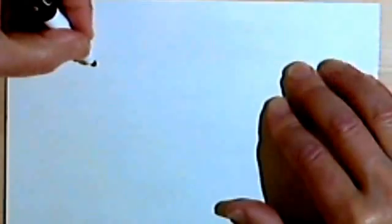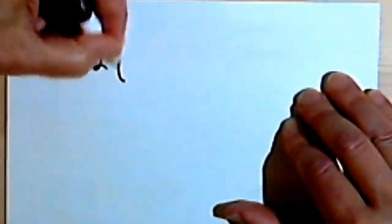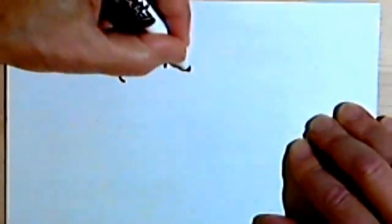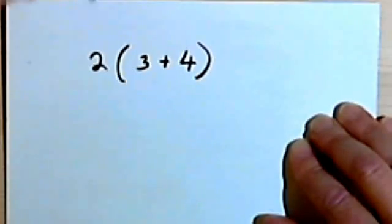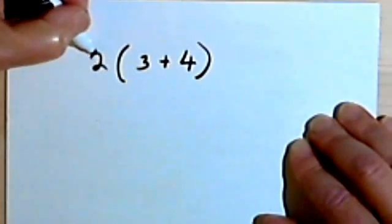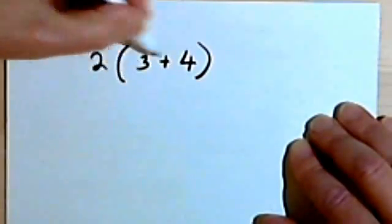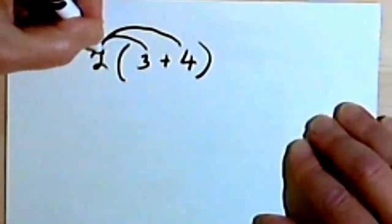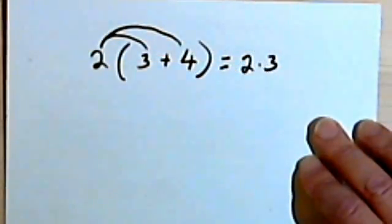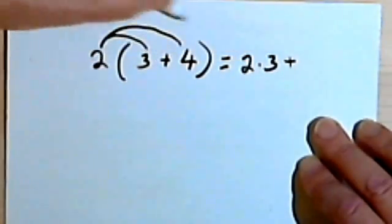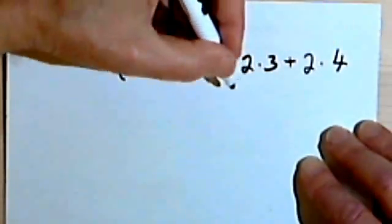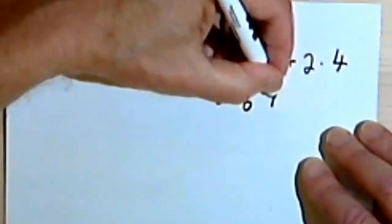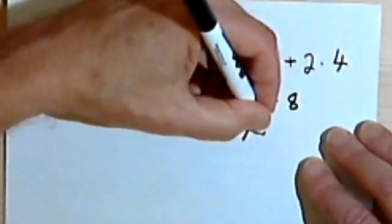So the last property is called the distributive property of multiplication over addition, which is a great name. Here's all it means. Let's say I've got 2, and I want to multiply that by 3 plus 4. What the distributive property tells me is that I can distribute this multiplication, the 2 times something, to whatever is in the parentheses. So I'm going to distribute the 2 times to the 3 and distribute it to the 4. 2 times 3, let's just write that as 2 times 3. I'll take my plus sign, and then 2 times 4. Carrying out this multiplication, I'm going to get 2 times 3 is 6, plus 2 times 4 is 8, and that's going to equal 14.